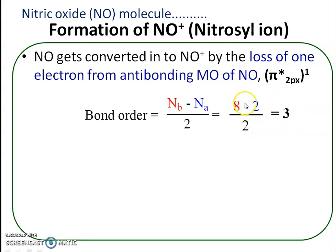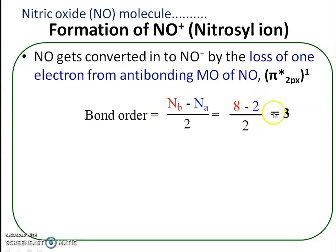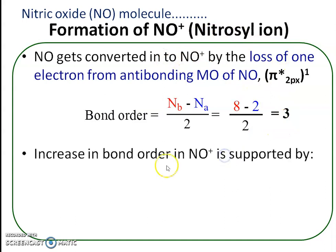In nitric oxide, the number of bonding electrons is 8 and the number of antibonding electrons is 3. In the nitrosyl ion, as one electron is lost, the number of antibonding electrons becomes 2 instead of 3. So bond order = (8 − 2) / 2 = 3. This means the bond order for the nitrosyl ion is 3.